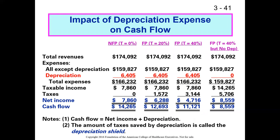We want a high amount of cash flow. An organization can show low net income and still have a very high amount of cash flow. At the end of the day, cash flow is really what matters because it's what pays the bills, pays the employees, and keeps the lights on.